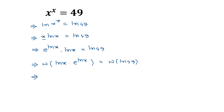Applying the Lambert W identity — W of a times e to the power a equals a — the left side simplifies to ln of x. Therefore, ln of x is equal to W of ln of 49.